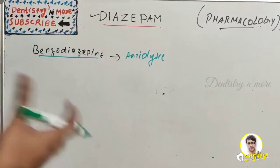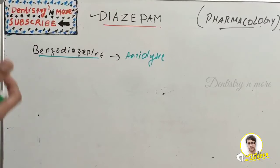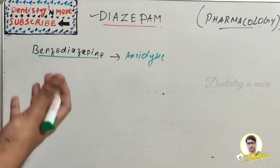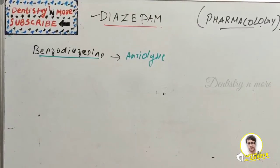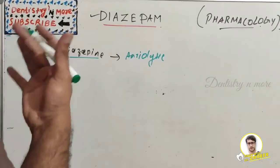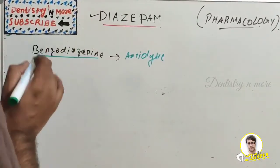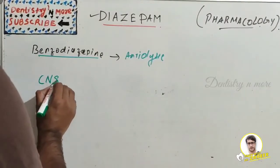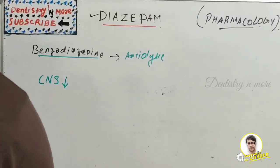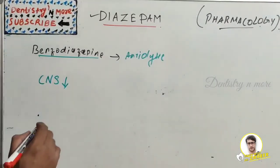Diazepam is used to treat a wide range of conditions including anxiety, seizures, alcohol withdrawal syndrome, muscle spasms, and trouble sleeping. It basically depresses all levels of the central nervous system through the increased action of GABA.